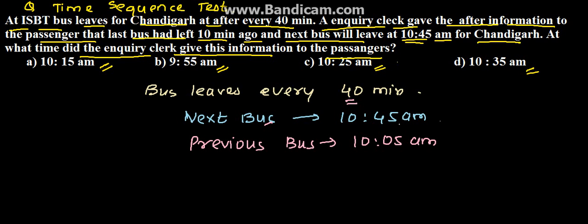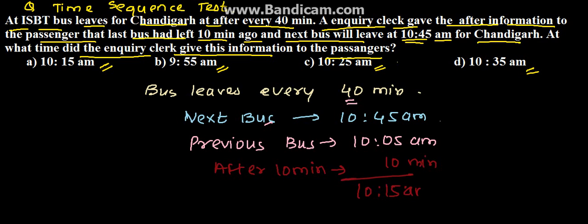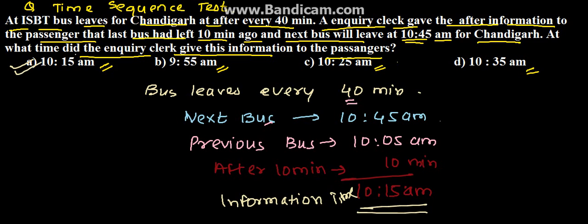The clerk gave this information 10 minutes after the previous bus left at 10:05 AM. So adding 10 minutes, the time becomes 10:15 AM. This is the information time — that is option A, 10:15 AM. This is the solution for the given problem.